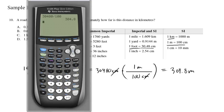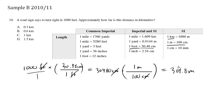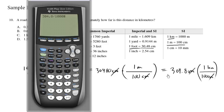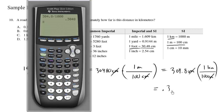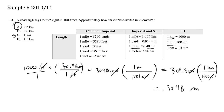Now we're very close. To convert meters to kilometers, I use the ratio 1 kilometer over 1000 meters. Writing 1000 meters in the denominator causes the meter units to cancel out, leaving kilometers. The numerator 304.8 divided by 1000 gives us 0.3048 kilometers, so our final answer is approximately 0.3 kilometers. Choice A is correct.